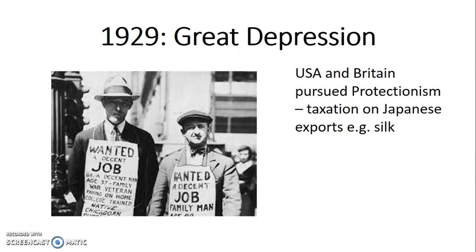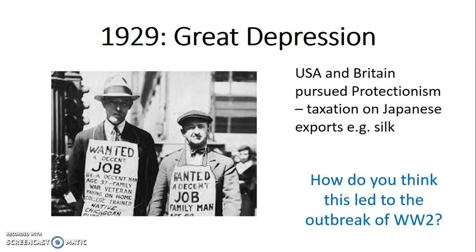You also have to remember that in 1929, the Great Depression occurred in the USA, and it affected many countries dependent on the USA. When the Great Depression occurred, USA and Britain pursued a policy of protectionism — they banned imports and placed taxation on Japanese exports such as silk. This affected Japan's economy because they were not able to get the profit they needed. All three of these factors contributed to the economic crisis in Japan, encouraging them to carry out an expansionist policy.